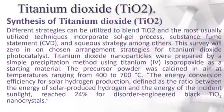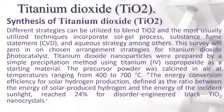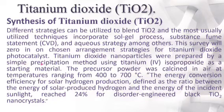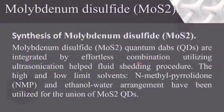For synthesis of titanium dioxide, different strategies can be utilized to prepare TiO2. The most commonly used techniques incorporate sol-gel process, chemical vapor deposition (CVD), and aqueous strategies, among others. Titanium dioxide nanoparticles were prepared by a simple precipitation method using titanium oxide as a starting material. The precursor powder was calcinated in air at temperatures ranging from 400 to 700 degrees Celsius.